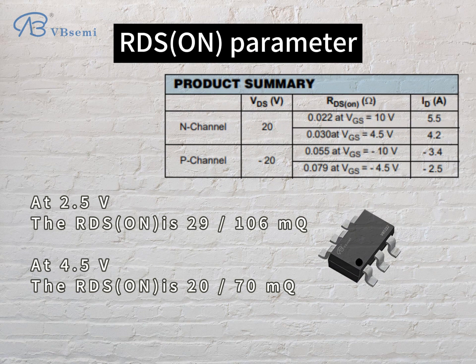The RDS-ON parameter: at Vgs 0.5V, the RDS-ON is 29 or 106 mΩ. At Vgs 0.5V, the RDS-ON is 20 or 70 mΩ.